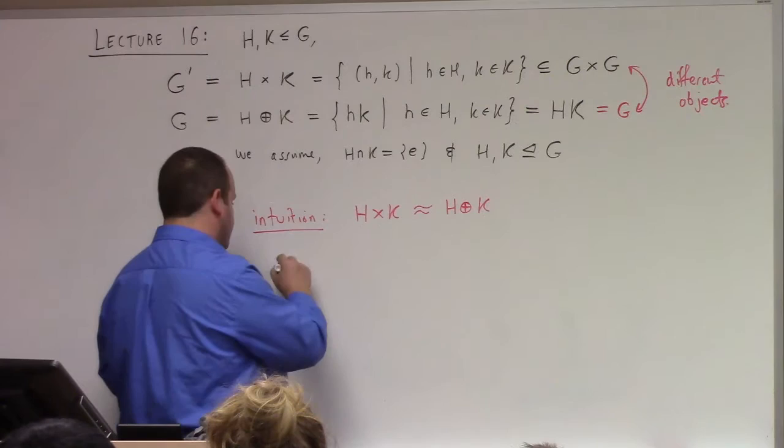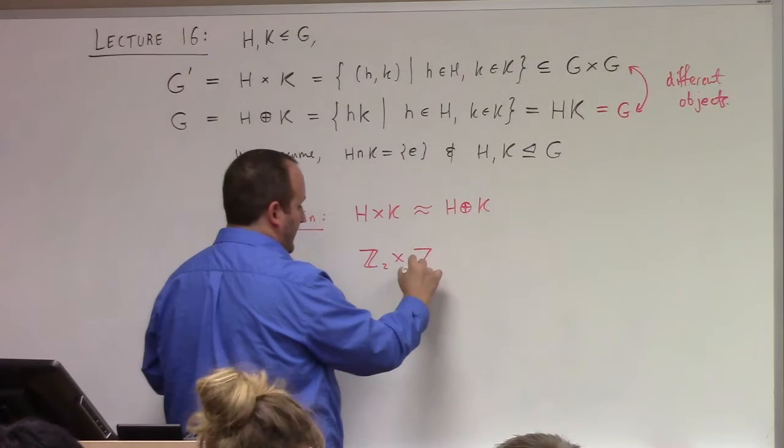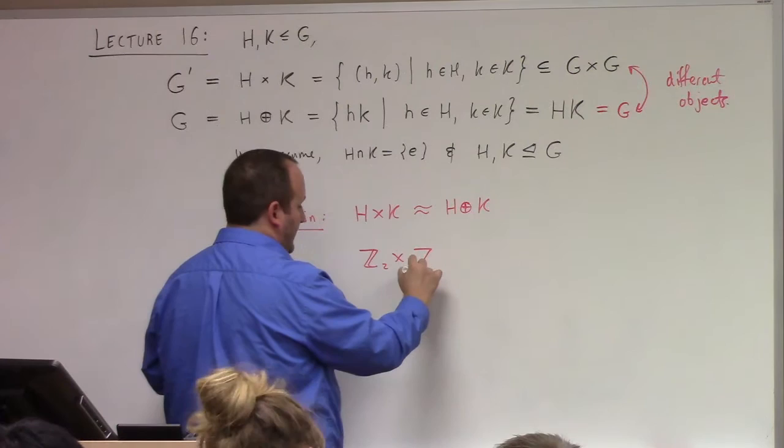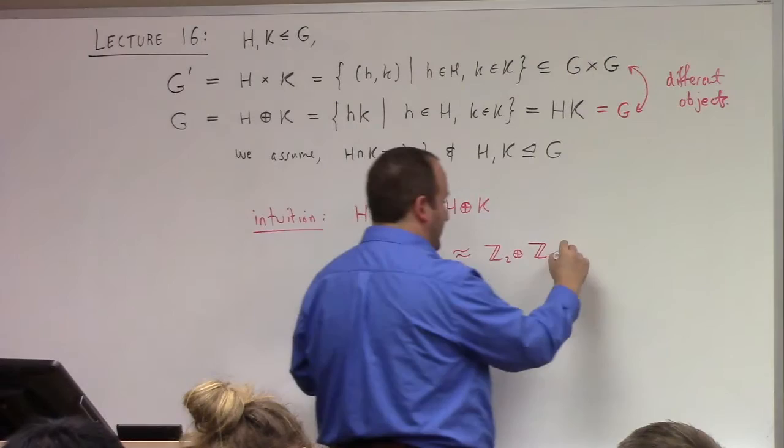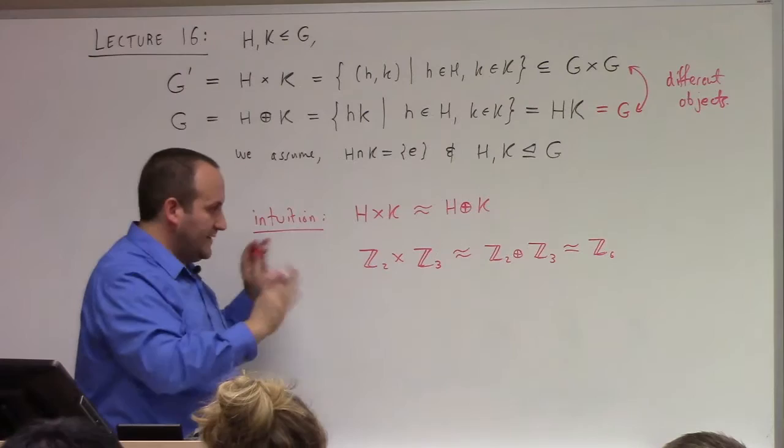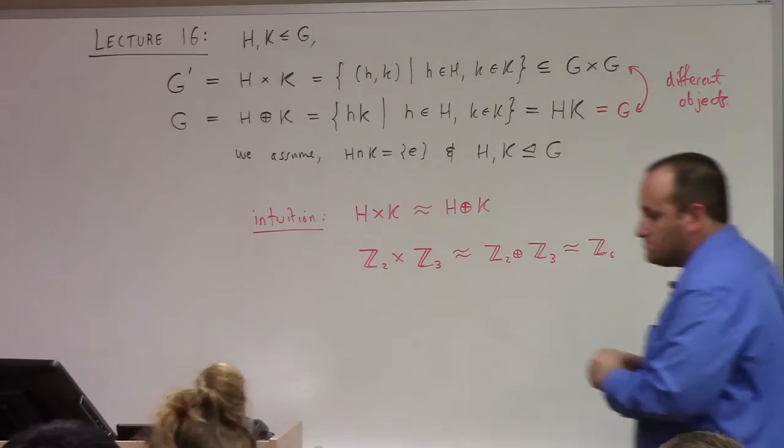So a positive example would be: if you take Z2 cross Z3 — the external direct product — then this is isomorphic to Z2 internal direct sum Z3, which you can show is isomorphic to Z6. We'll make this one of the results we get today. Let me show you what happens if we don't have normality, to show you why we need it.